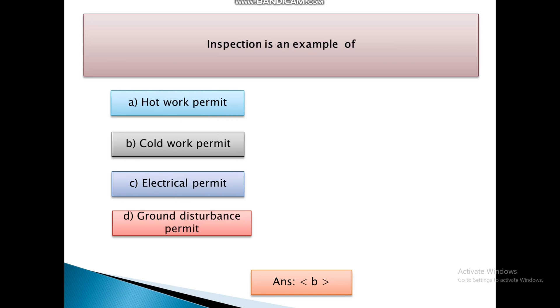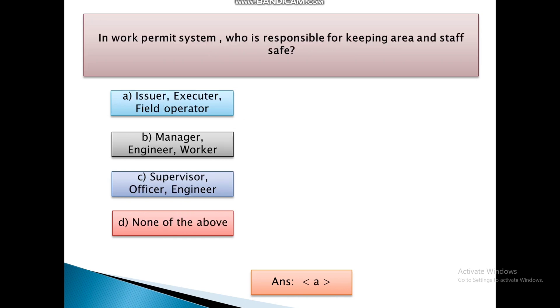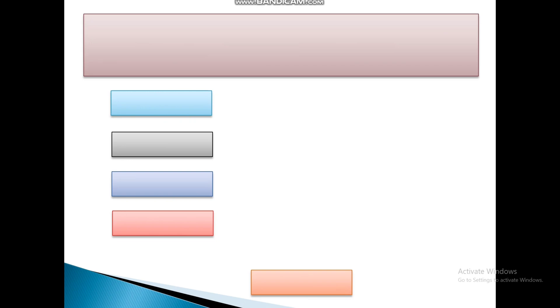Inspection is an example of: hot work permit, cold work permit, electrical permit, ground disturbance permit. And the answer is B, that is inspection is an example of cold work permit. In work permit system, who is responsible for keeping area and staff safe? First Option is Issuer, Executor, and field operator. Second, Manager, Engineer, Worker. Third, Supervisor, Officer, Engineer. And Fourth is none. And the answer is A, that is issuer, executor, and field operator.